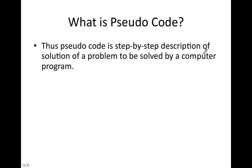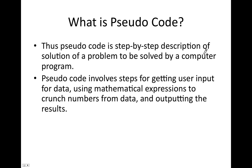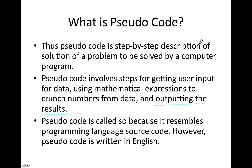Pseudocode is a step-by-step description of the solution to a problem that is to be solved by a computer program. Pseudocode involves steps for getting user input for data, using mathematical expressions to crunch numbers from the data, and then outputting results. We call it pseudocode because it resembles programming language source code but is written in English — it looks like source code but it is not.